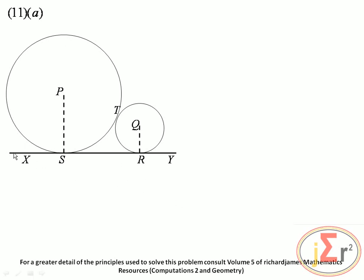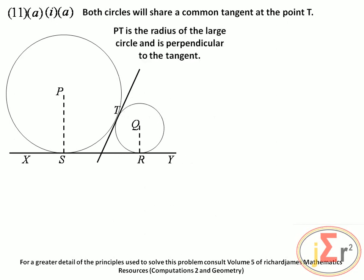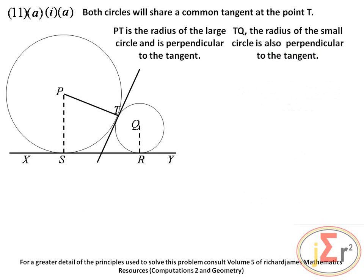The two circles with centers P and Q and radii 5 centimeters and 2 centimeters respectively are drawn so that they touch each other at T. We need to state with a reason why P, T, Q is a straight line. Both circles share a common tangent at point T. PT is the radius of the large circle and is perpendicular to the tangent; TQ is the radius of the small circle and is also perpendicular to the tangent.